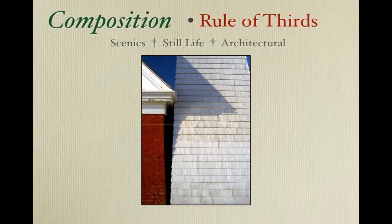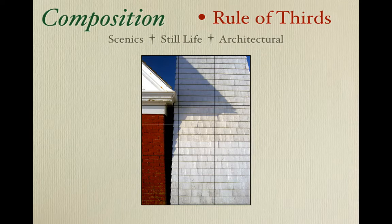This image has strong vertical and horizontal lines, which makes it an excellent candidate for Rule of Thirds. The way you apply the rule is that you try and align the strongest vertical and horizontal lines with the lines on the grid, and try and place the part of your image that has the most visual interest where the lines intersect, and avoid placing anything strong in the center of the image.